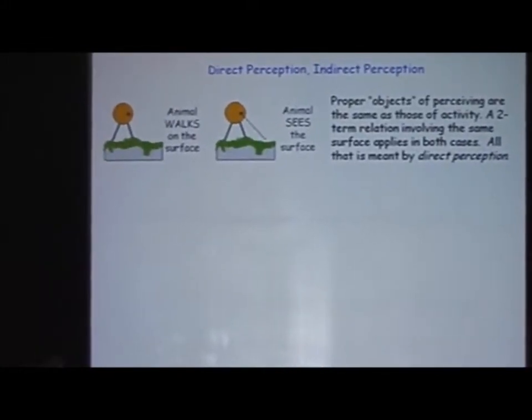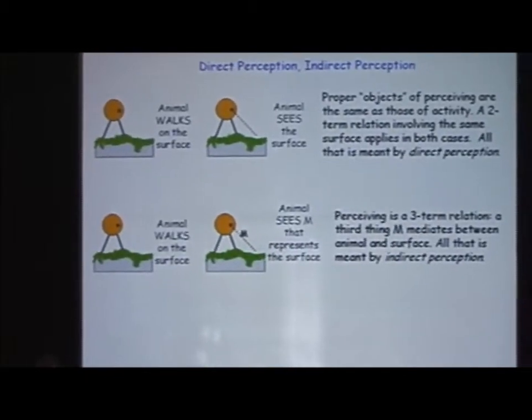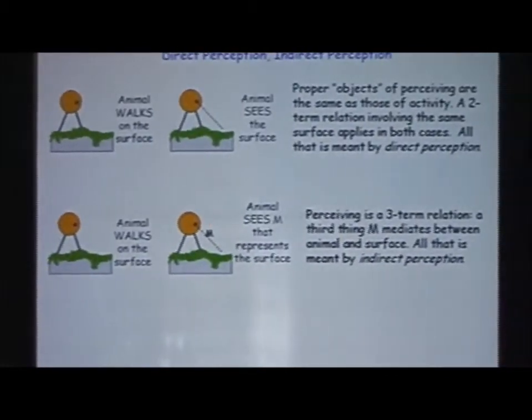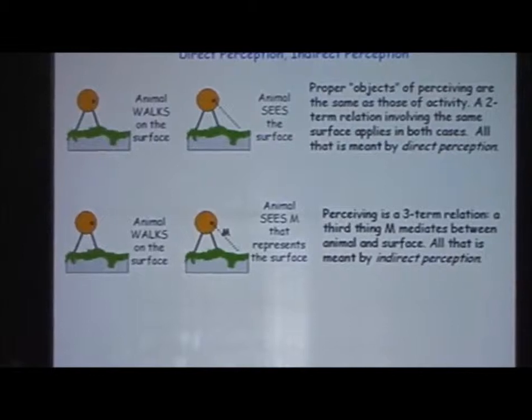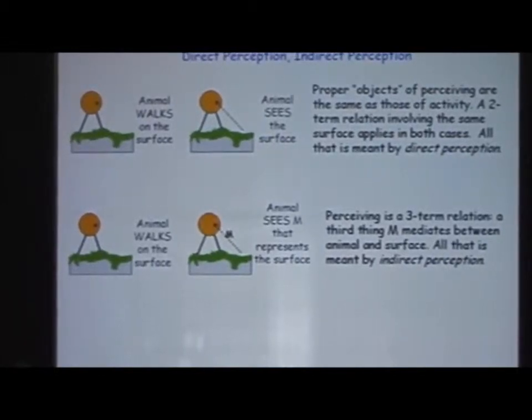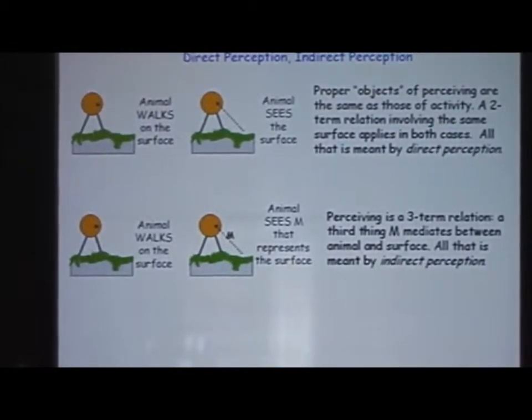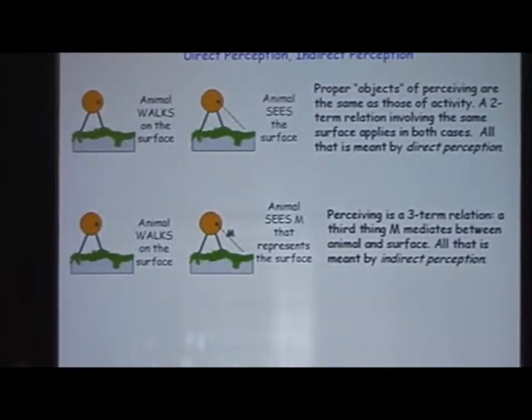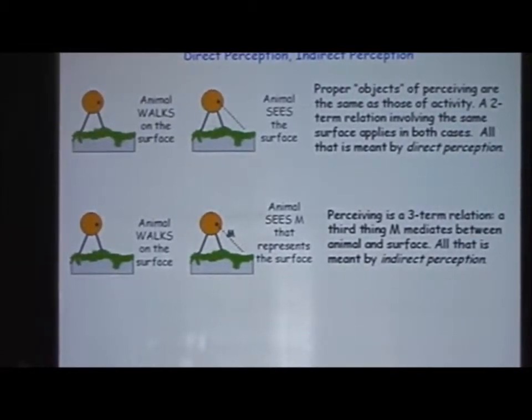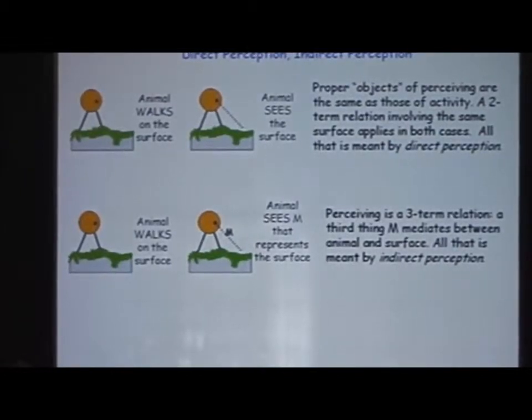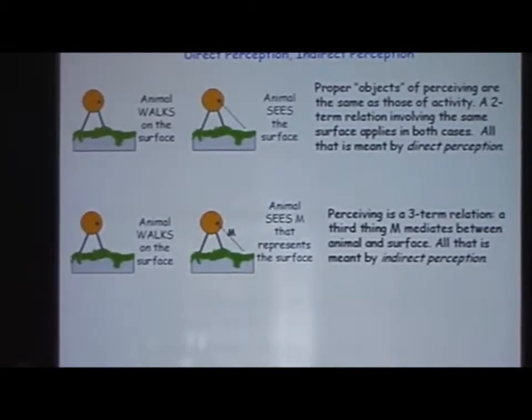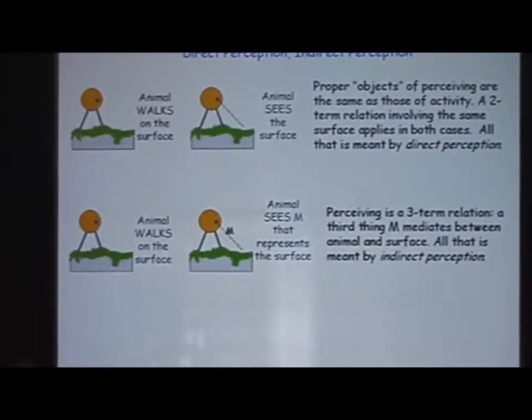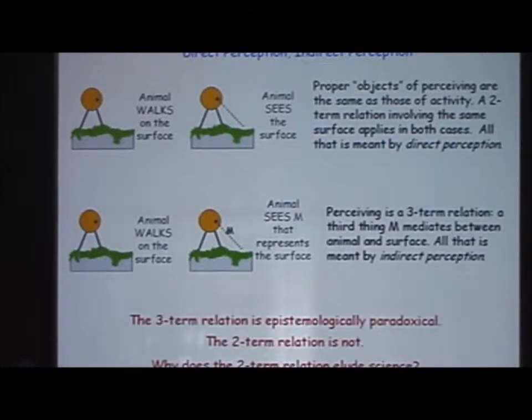But we have typically proceeded along this line. Indirect perception itself is a terribly simple idea. It says, if you wish, that there is a third term, a tertium quid, an in-between thing that must be brought to bear to make theory viable. So here, you'll notice, the two diagrams are slightly different. The animal walks on the surface. The animal sees M that represents the surface.